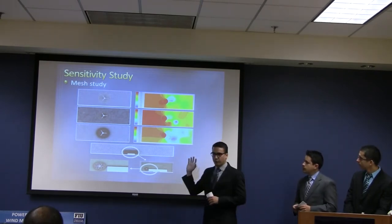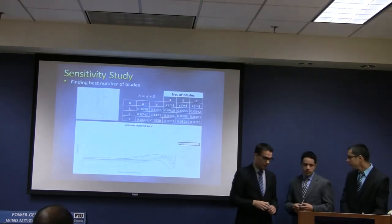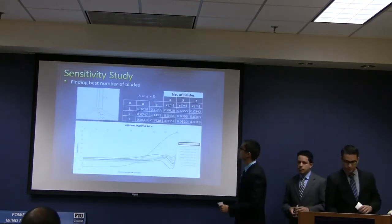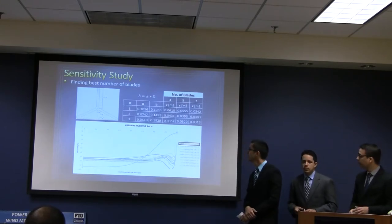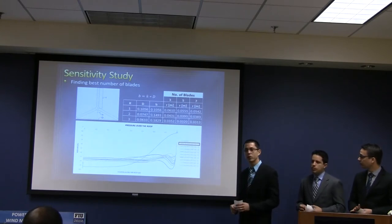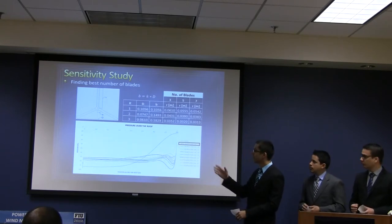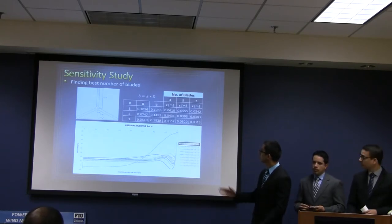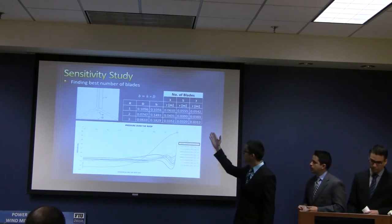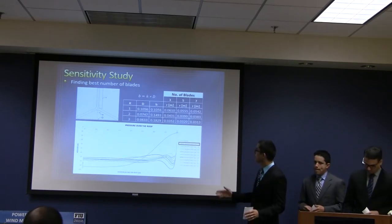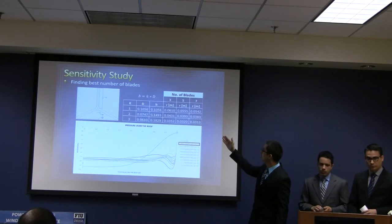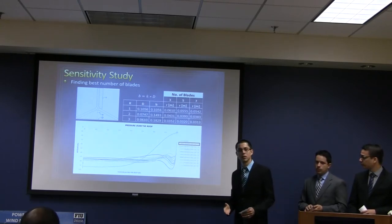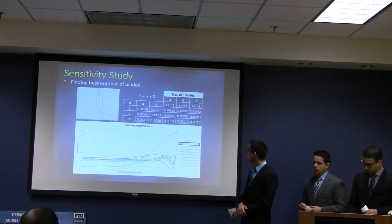The next part of the sensitivity study was to find the best number of blades for a straight turbine. We had a design constraint — the cross-sectional area of the wind tunnel — and we scaled everything to 12% of that cross-sectional area for further testing. There is a relationship between the length of the turbine and the tip-to-tip distance. We tried to determine which of three, five, or seven blades would be the best configuration.